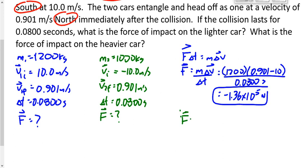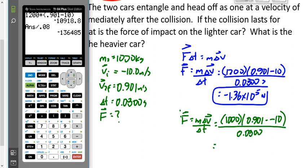What's the green force? Positive 1.36 times 10 to the 5. Done. I'm actually going to do it mathematically here just to prove that. Watch this. 0.901 minus negative 10, divided by 0.08. 1,000 times bracket 0.901 minus negative 10, divided by 0.08. And as predicted, we get 1.36 times 10 to the 5, positive.